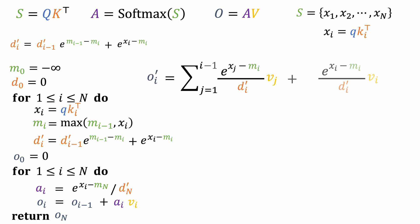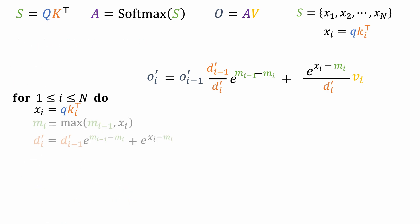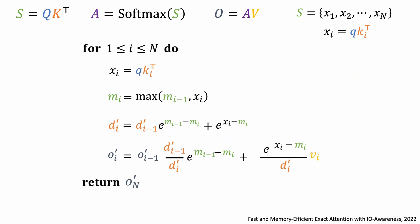First, we move the i-th term out of the summation and multiply some dummy values of 1. Now we can swap these terms and regroup the equations like this. We recognize the summation in the parentheses is simply oi-1'. This forms a recurrence relation between oi' and oi-1'. By removing the dependency of mN and dN', we can now fuse all the computation into one single loop. This approach forms flash attention. Flash attention avoids materializing the large attention matrix by fusing all the computations together. We still get exact results after iterating through all the elements in the sequence.